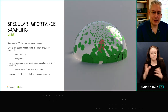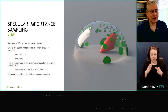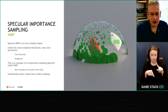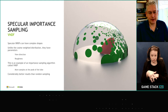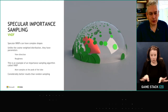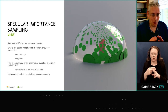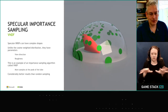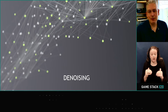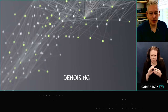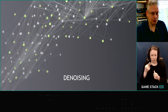Importance sampling gets really useful and really complicated when you start looking at specular distributions. These are more complicated because there are more parameters — a cosine-weighted distribution is fixed, but specular distributions change with things like view direction and surface roughness. In Minecraft we use a distribution called VNDF, which works remarkably well and is way better than doing random sampling. Denoising is an umbrella term for a family of techniques that really make real-time ray tracing possible.